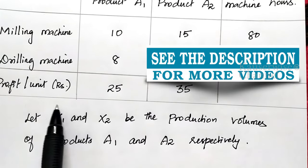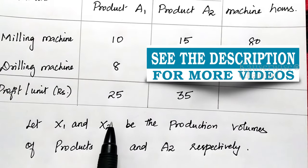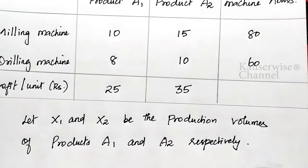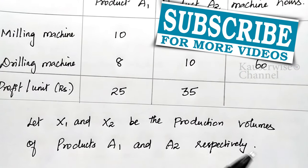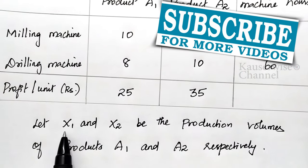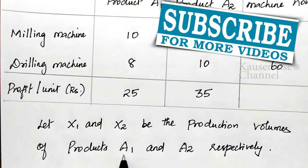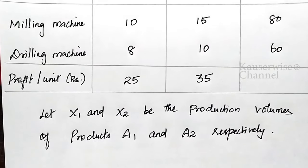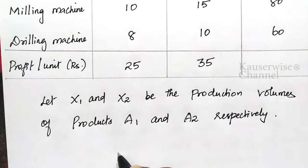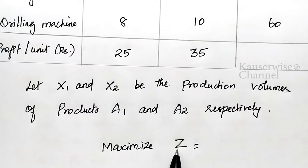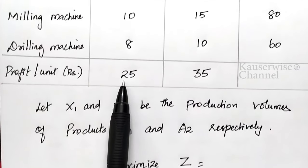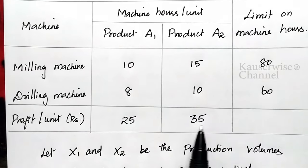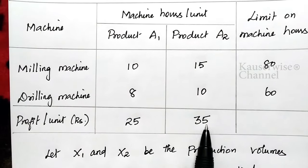We are going to find out how many number of A1 and how many number of A2 — so here X1 and X2 are unknown, they are the decision variables. Since the problem is a maximization problem, we start: Maximize Z equals — the profit per unit is 25 rupees for product A1 and 35 rupees for product A2.